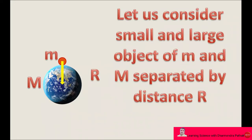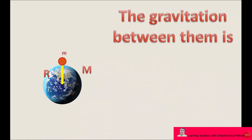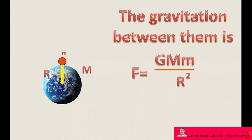Let us consider small and large objects of mass: small m and capital M, separated by distance R. The gravitation between them is F equal to G, capital M, small m upon R square, because the distance between these two objects is equal to the radius of large objects, or radius of the earth.